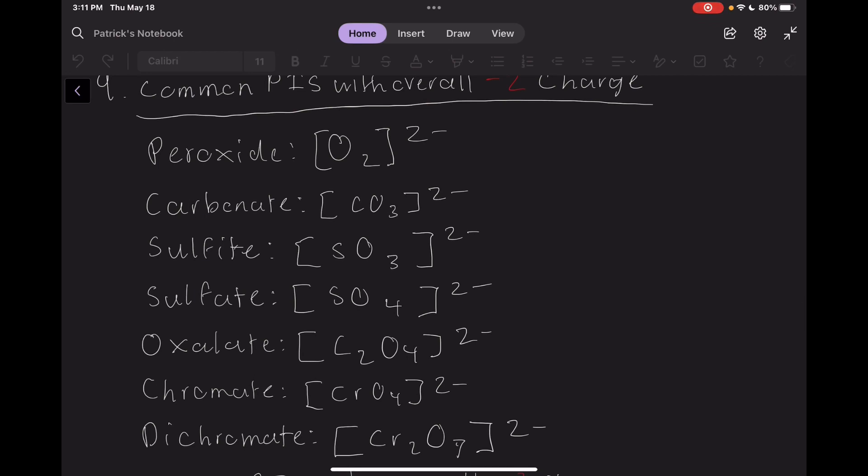Polyatomic ions with a charge of negative 2. Seven of them in total. It might be noticed that chromate and dichromate involve chromium, but it's important not to get mixed up here.